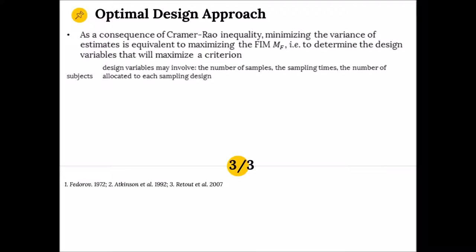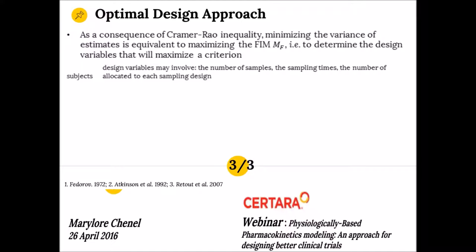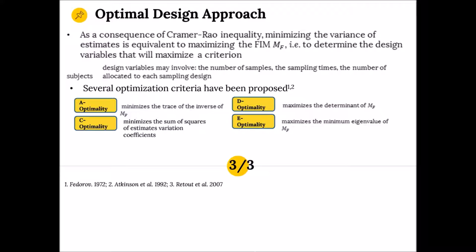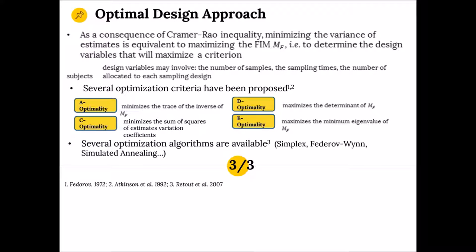As a consequence of the Cramér-Rao inequality, minimizing the variance of estimates is equivalent to maximizing the Fisher information matrix — that is, determining the design variables that will maximize the criteria. These design variables can be the number of samples, the sampling time, and the number of subjects allocated to each sampling design. Several optimization criteria have been proposed, and D-optimality is the one most commonly used. It consists of maximizing the determinant of the Fisher information matrix, using algorithms such as the simplex, the Fedorov exchange, or simulated annealing.